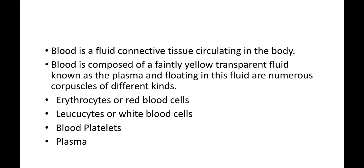Blood is a Fluid Connective Tissue circulating in the body. Blood body ke different parts ki cells ke beech communication karne me help karta hai. Blood oxygen aur nutrients ko tissues tak pahunchata hai, tatha CO2 aur waste products ko excretory organs tak lekar jata hai. Iske alawa blood antibodies aur hormones ko transport ka madhyam bhi hai. Blood is composed of a light yellow transparent fluid called plasma, jisme different types ki blood corpuscles float karti hui dikhai deti hain.